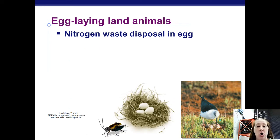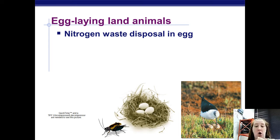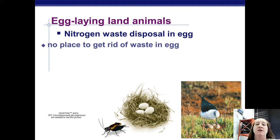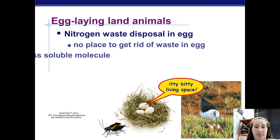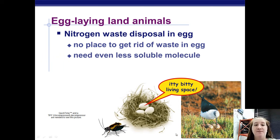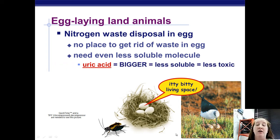For egg layers with a hard-shelled egg, everything the embryo produces over the course of its development has to stay inside. If it's in there with ammonia or urea, the embryo would be poisoned. So birds and reptiles use lots of energy to convert their ammonia into an even less soluble molecule called uric acid. It's bigger and barely soluble — it actually forms a bit of a powder.